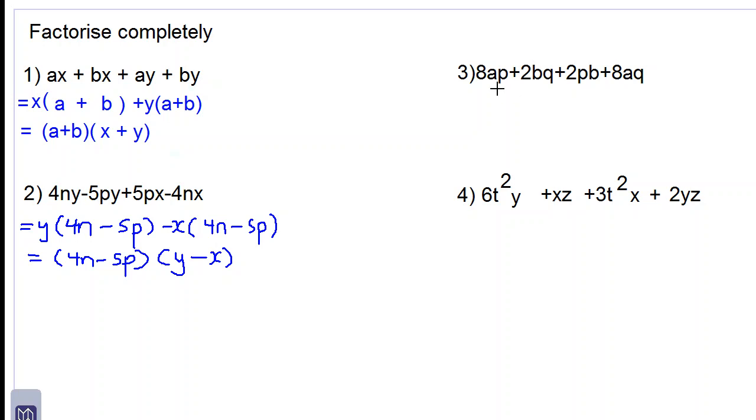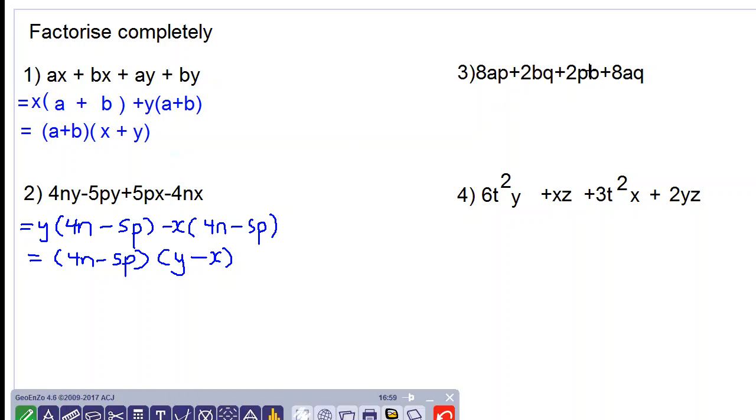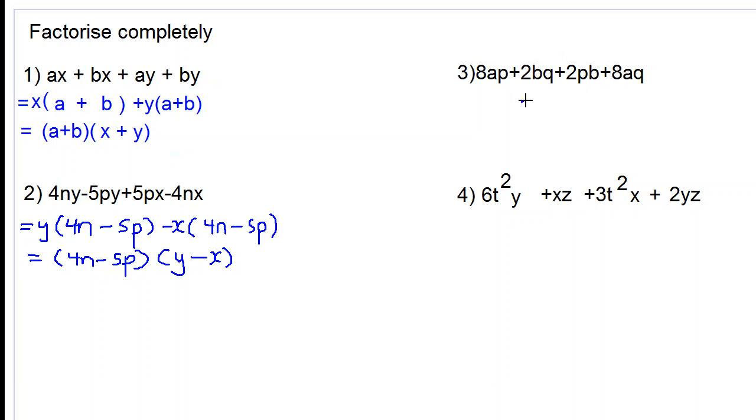Let's move on to number 3. 8ap plus 2bq plus 2pb plus 8aq. Let's factor the two middle terms. They have, both of them have the common factor 2b, which we take out.